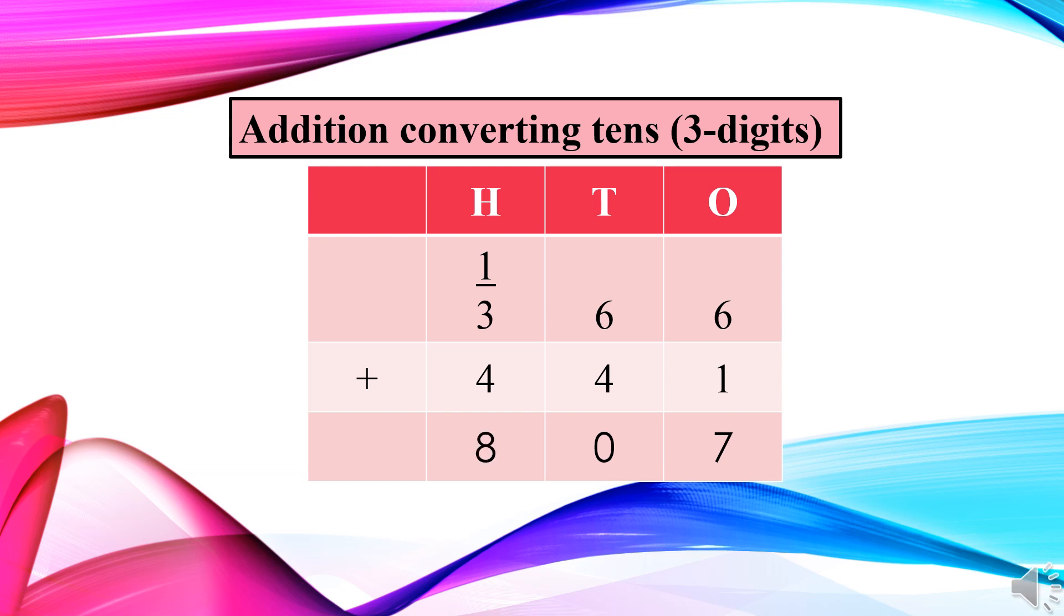How? Kaise mila hamein eight? Four plus three is equal to seven. Aur hamare paas ek one bhi to tha na, jo ke tens place se convert hua tha. So seven plus one is equal to eight. Very nice. Clap for yourselves.